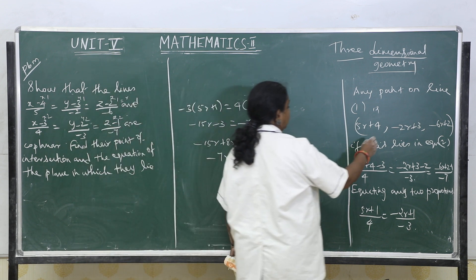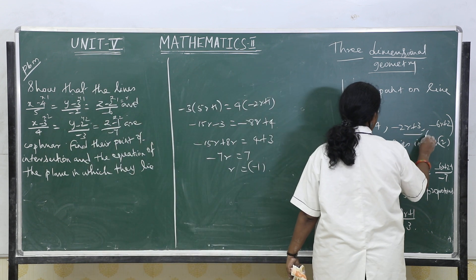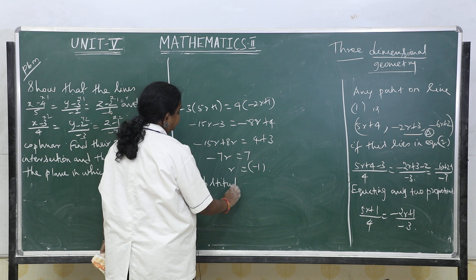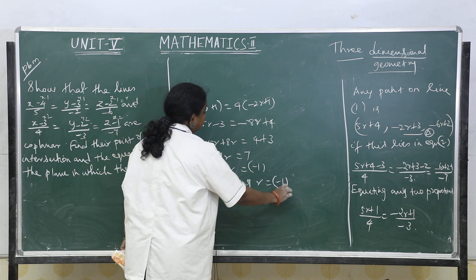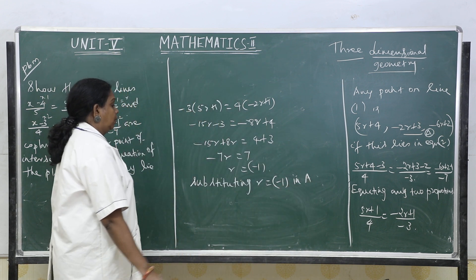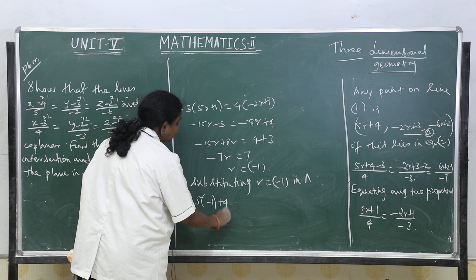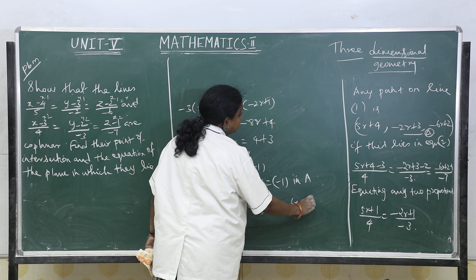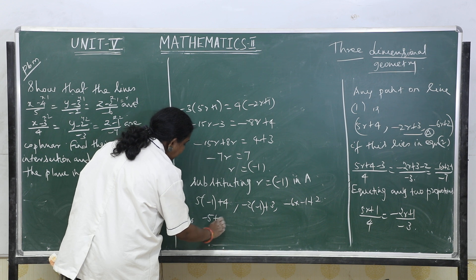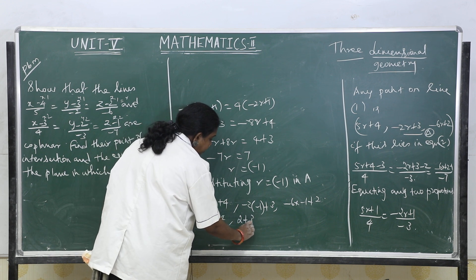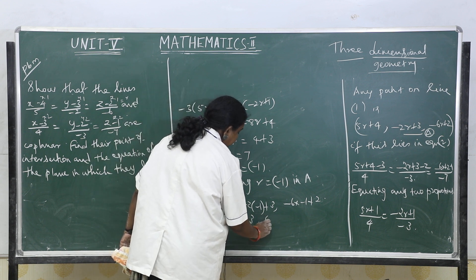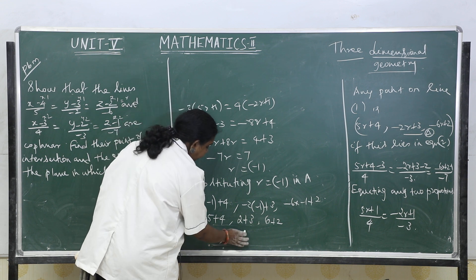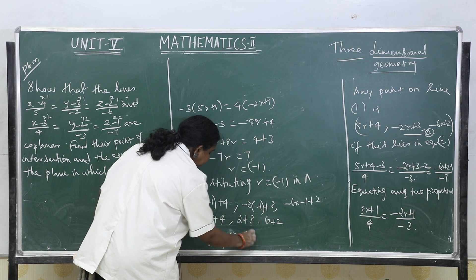Substituting r = −1 into the point on line 1: x = 5(−1)+4 = −1, y = −2(−1)+3 = 5, z = −6(−1)+2 = 8. Therefore, the point of intersection is (−1, 5, 8).